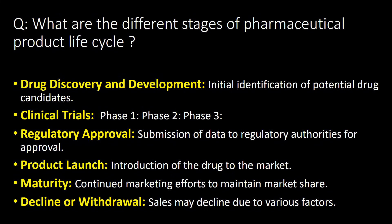What are the different stages of the pharmaceutical product life cycle? There are six different stages: first, drug discovery and development; second, clinical trials; third, regulatory approval; fourth, product launch; fifth, maturity; and sixth, decline or withdrawal.